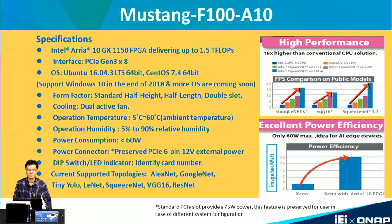Here are some specifications of the Mustang F100-A10. It uses the Intel Arria 10 GX 1150 FPGA. The interface is PCIe Gen 3x8. The supported operating systems are Ubuntu and CentOS, and Windows 10 support is coming soon. The form factor is compact size, half-length double slot, with dual fans for the cooling system. There is a power connector preserved for PCIe 6-pin 12V external power. Currently supported topologies include AlexNet, GoogLeNet, LeNet, SqueezeNet, VGG, and ResNet. Performance is 90 times higher than a CPU-only system, and power efficiency is five times better than a CPU-only system.